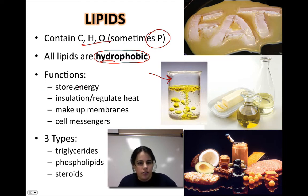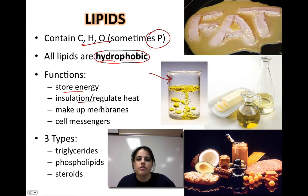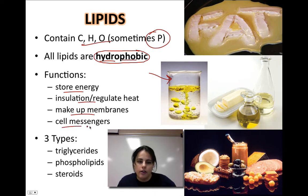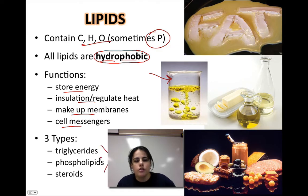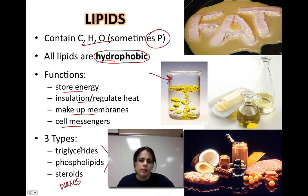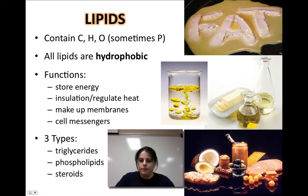Different lipids have different functions. Lipids are another way that we store our energy. They can also provide insulation and regulate our heat. Lipids make up cell membranes and other membranes in the body, and they also act as hormones and cell messengers. There are three major groups I'm going to talk about today: triglycerides, phospholipids, and steroids. There are also waxes, but these three are the ones you'll find inside the human body.